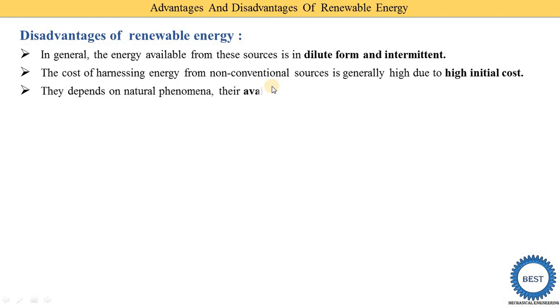Next, they depend on natural phenomena, so their availability is uncertain. All renewable sources depend on natural phenomena and they are uncertain. Solar energy depends on natural phenomena. Wind also depends on natural phenomena. Hydro power plants also depend on natural phenomena. Geothermal also depends on natural phenomena.